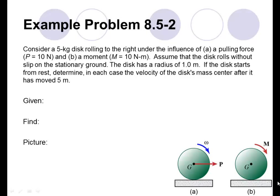This example is from the text Conceptual Dynamics, specifically example problem 8.5-2. The problem statement reads: consider a 5 kilogram disc rolling to the right under the influence of (a) a pulling force P equals 10 newtons, and (b) a moment M equals 10 newton meters. Assume that the disc rolls without slip on the stationary ground. The disc has a radius of 1.0 meters. If the disc starts from rest, determine in each case the velocity of the disc's mass center after it has moved 5 meters.